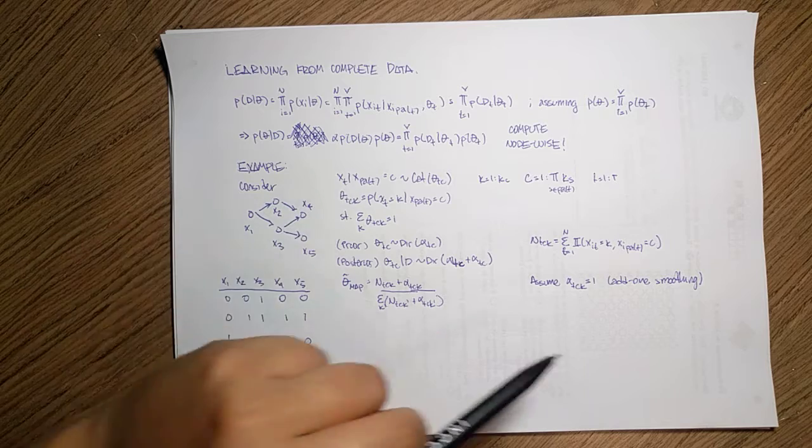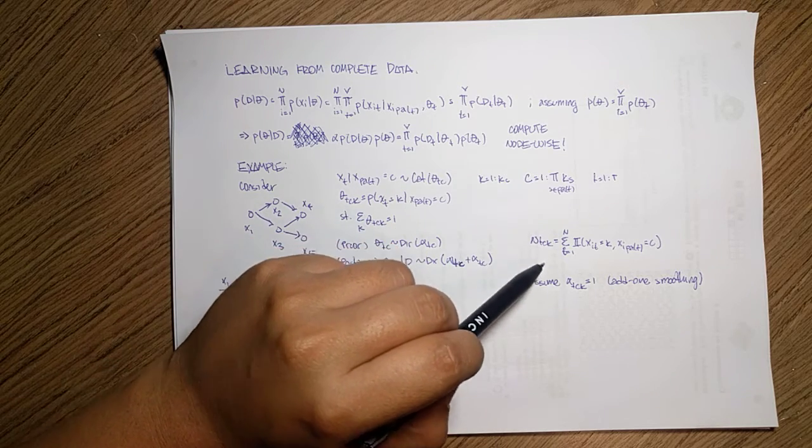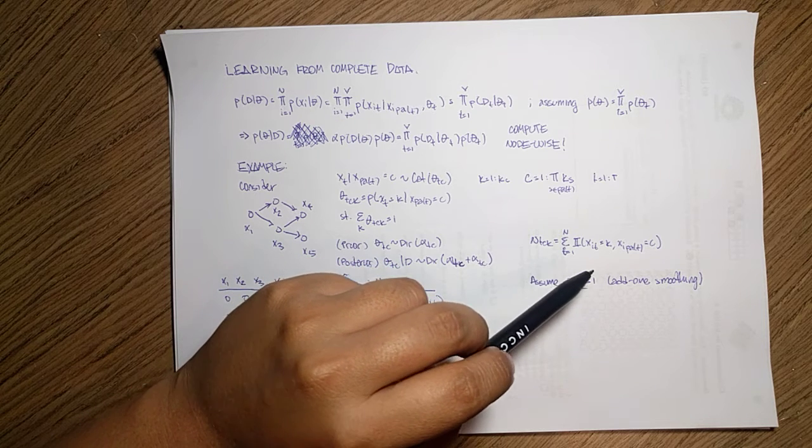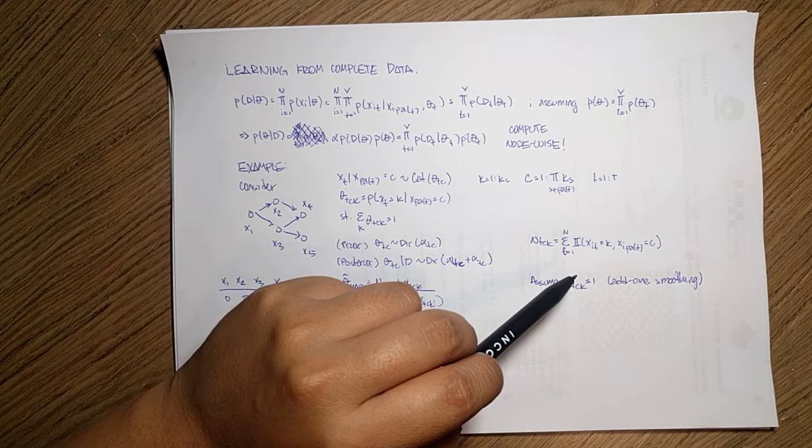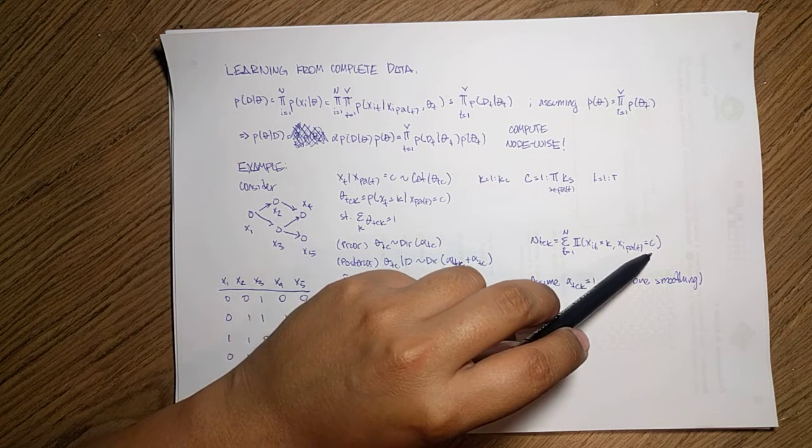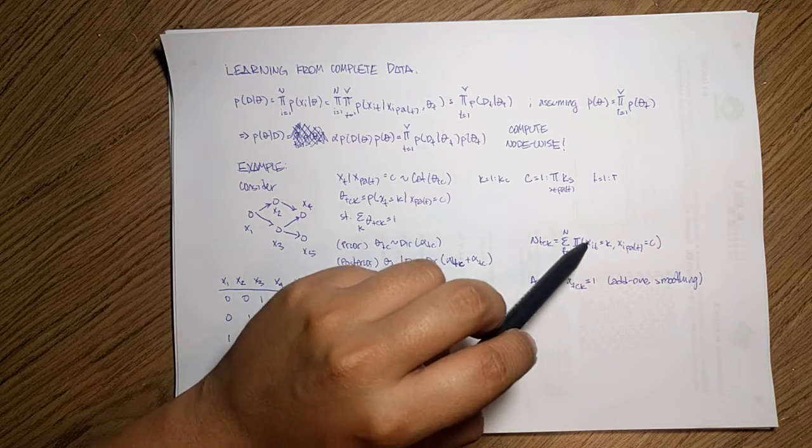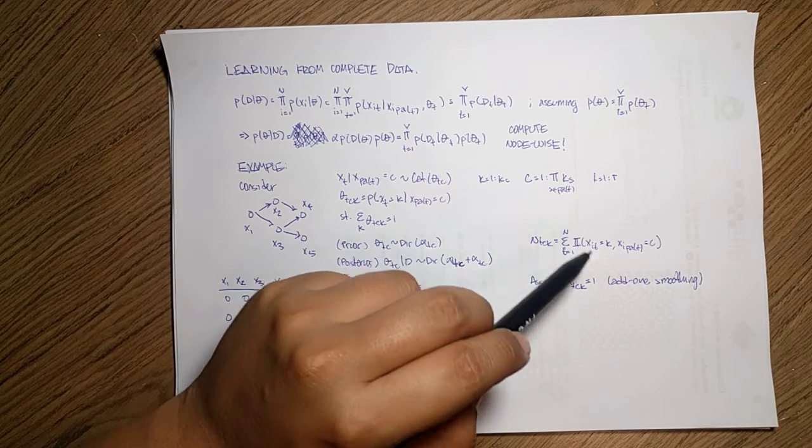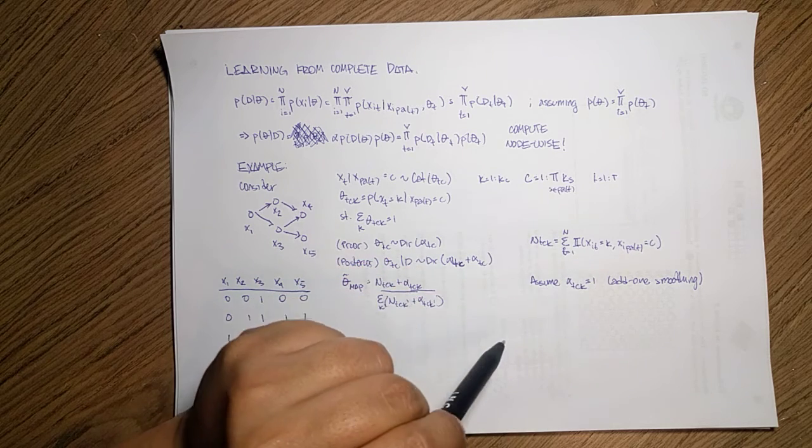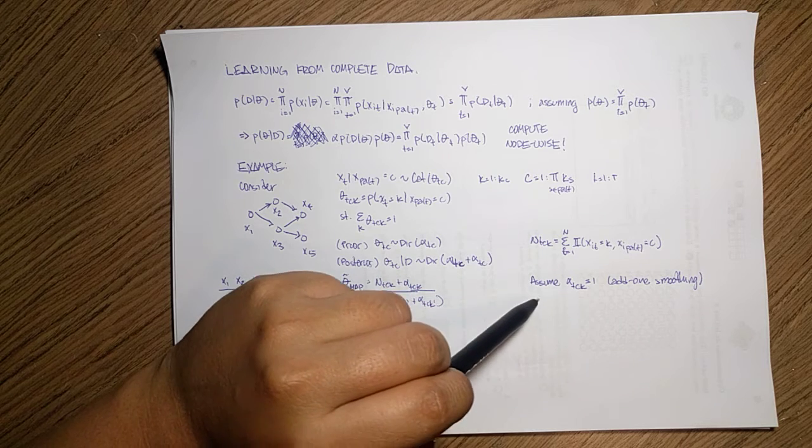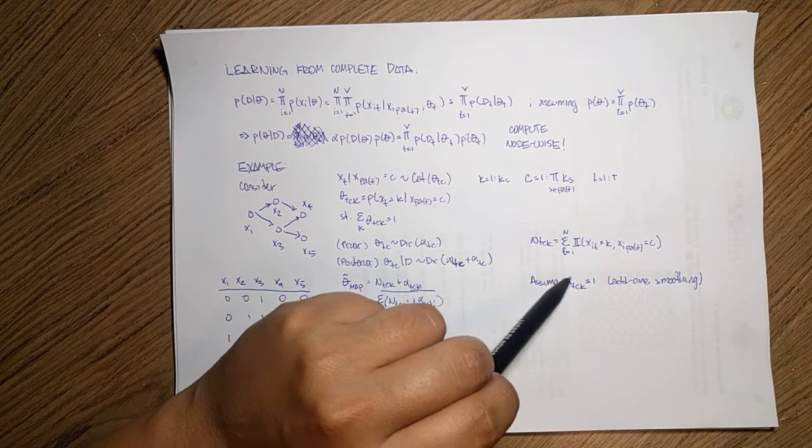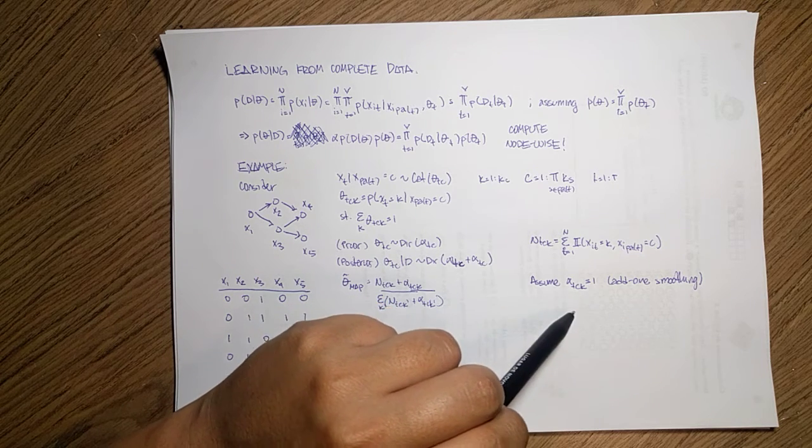And my NTCK is nothing else, but the counts. So I'm counting the number of times and the node T is actually in class K and the parent is in class C. So I'm just counting from my data, how many times the node is in each particular class given the parent. And we can further assume the a prior on this Dirichlet as one. So we can do add one smoothing.